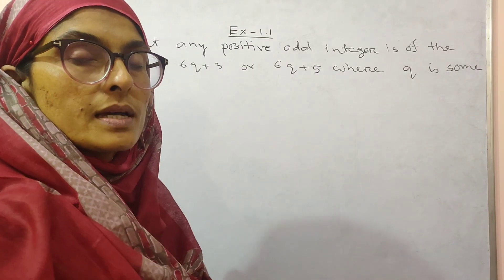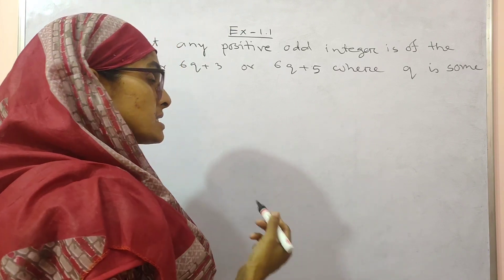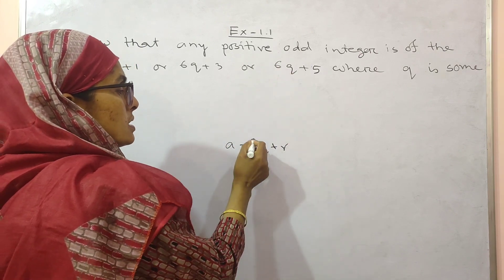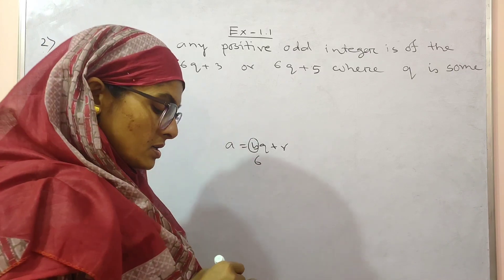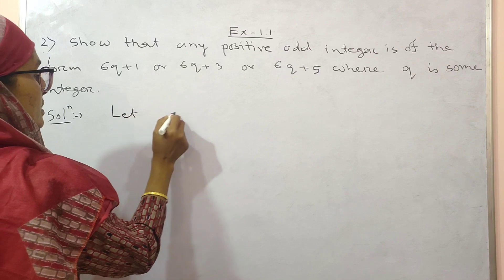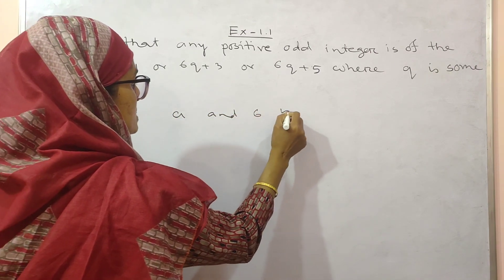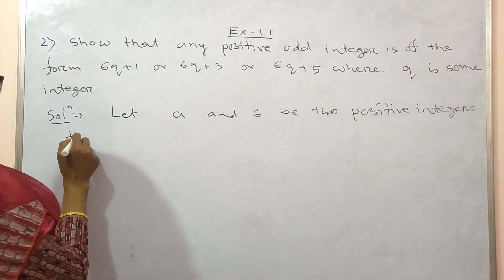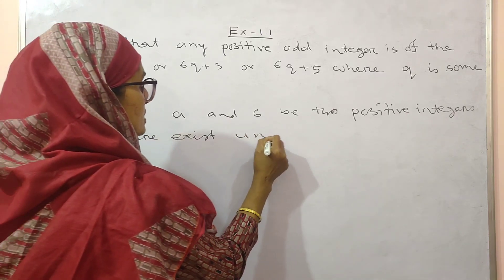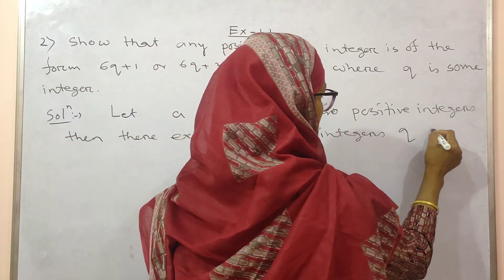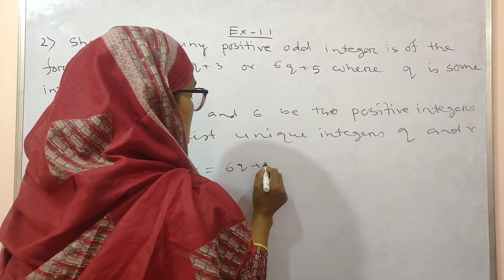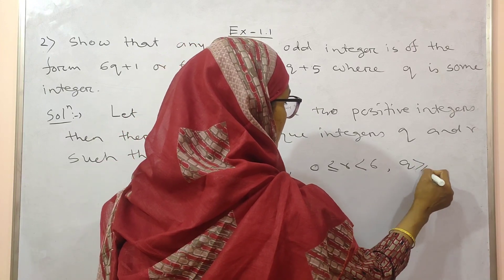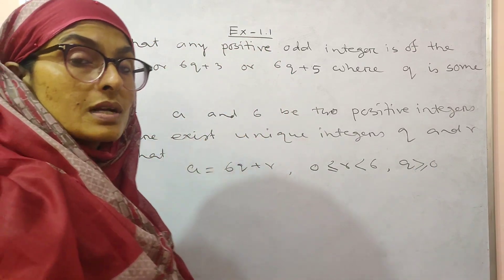What is the division algorithm? Let A and B be integers, then there exist unique integers q and r such that A equals bq plus r. But here you have to choose 6 in place of b. So write down: let A and B be positive integers, then there exist unique integers q and r such that A equals 6q plus r, where 0 ≤ r < 6 and q ≥ 0. This is Euclid's division algorithm.